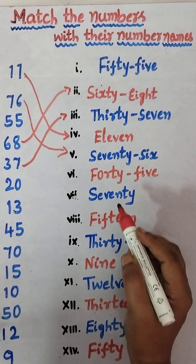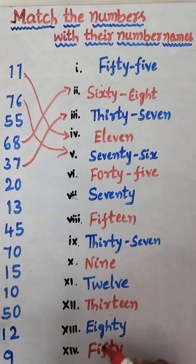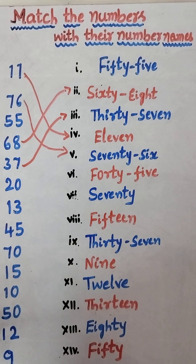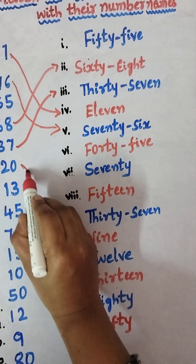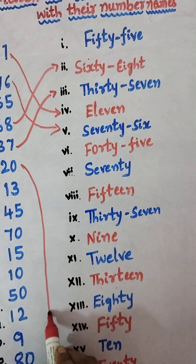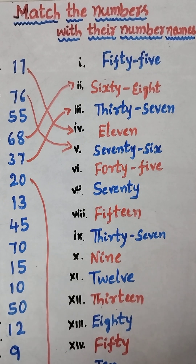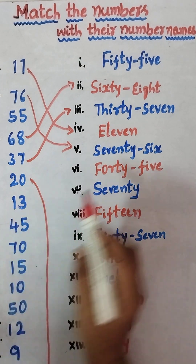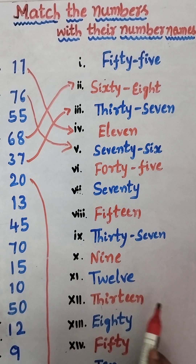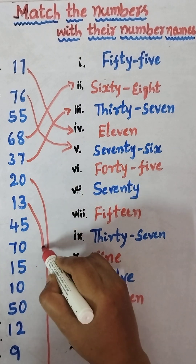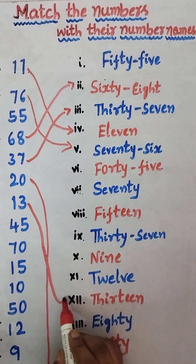Next, 20 — T-W-E-N-T-Y, twenty. Match 20 here. Next, 13 — T-H-I-R-T-E-E-N, thirteen. So we match 13 here.